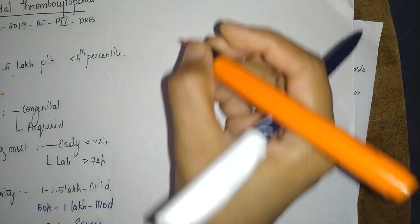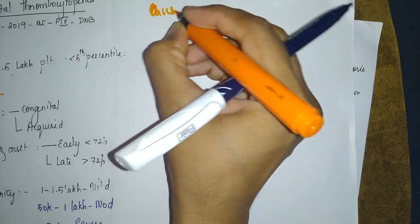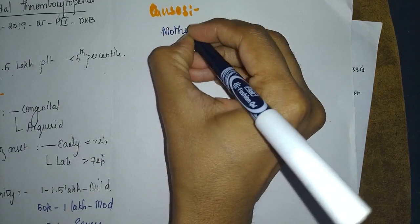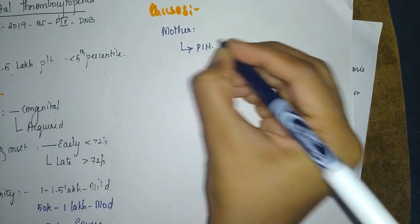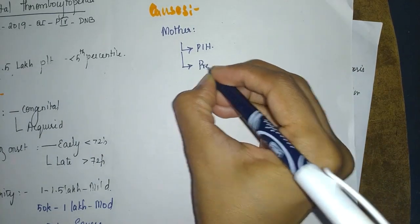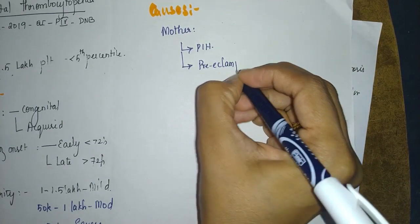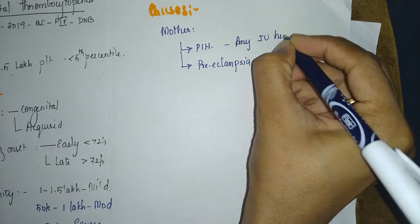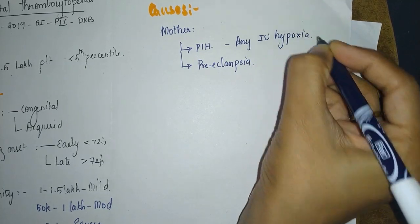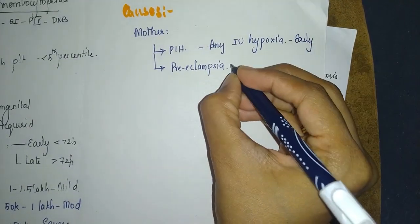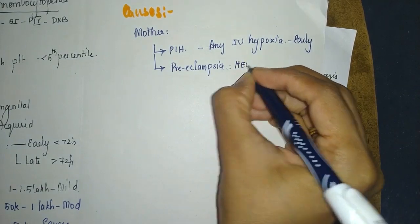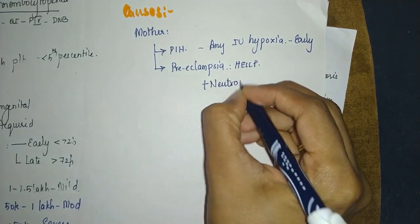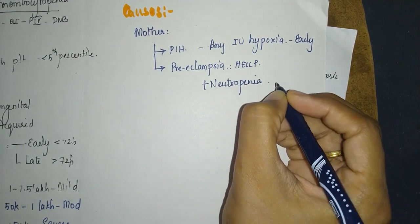Let us see the causes. We will start from the mother. Suppose she has pregnancy-induced hypertension or a complication of it — preeclampsia. This can present with thrombocytopenia. Any intrauterine hypoxia will cause thrombocytopenia, and they are usually present early. Preeclampsia and HELLP syndrome — they present with not just thrombocytopenia but also neutropenia. This is a point by which you can differentiate.